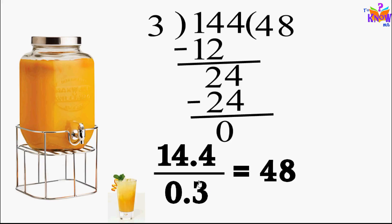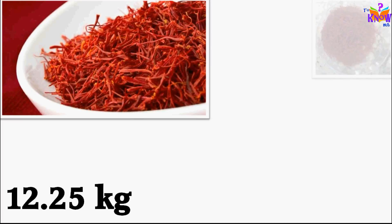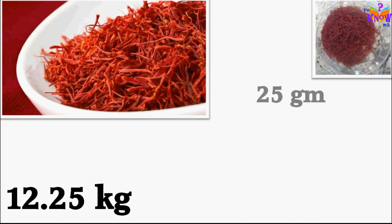Remember rule 1: first we have to lose decimal from the divisor. This time let's take a harder example. There is 12.25 kg of a very expensive spice. A person sells it as pack of 25 gram, which is very expensive.